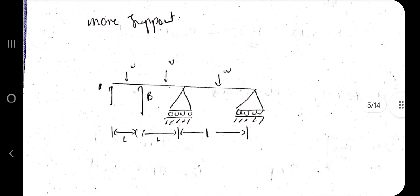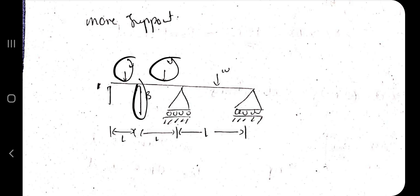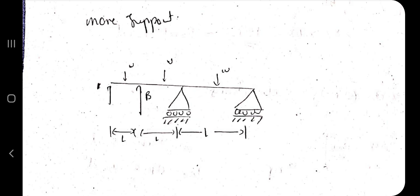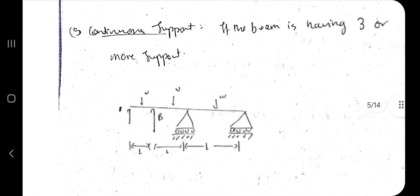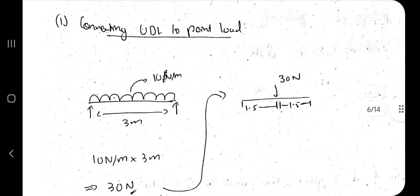For continuous support, it is similar but a combination is present — forces acting upward at certain points, with three or more supports. So those are the different types of supports. Before starting with the numericals, you need to know how to convert a UDL (uniformly distributed load) into a point load.